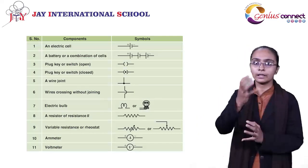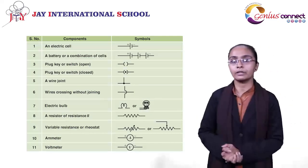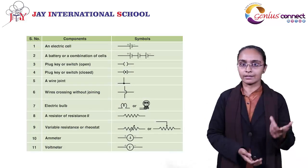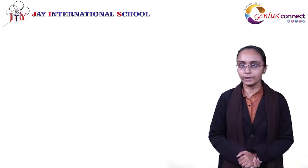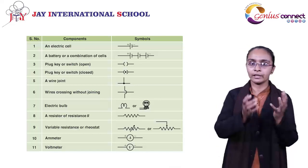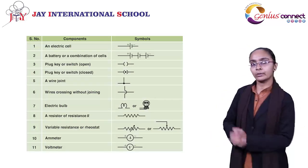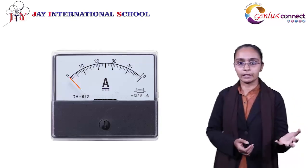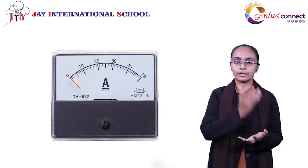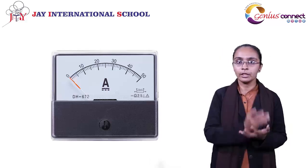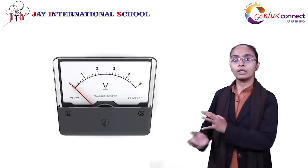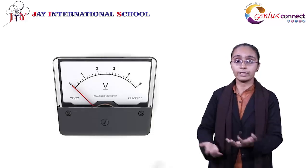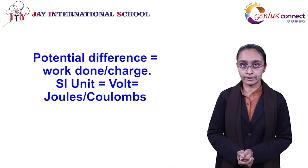Next we have to understand what are the particular components in a simplest electrical circuit. One is a switch, another is a battery, wire would be required, an ammeter is required, and a voltmeter is required. An ammeter is the particular component which measures the current, and a voltmeter is the particular component which measures the potential difference.